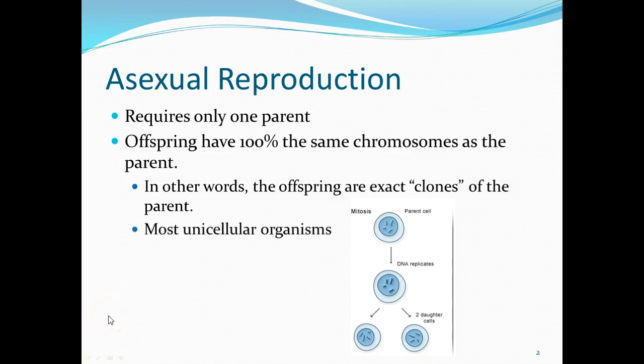This happens mostly with unicellular organisms — little one-celled organisms. The more simple an organism is, the more likely it is to be able to reproduce asexually.